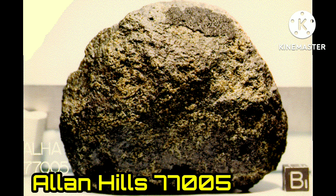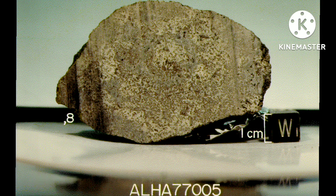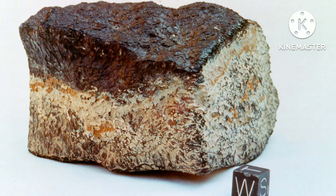Allan Hills 77005 is a Martian meteorite that was found in the Allan Hills of Antarctica in 1977 by a Japanese National Institute of Polar Research Mission Team and ANSMET. Like other members of the SNC group, ALH 77005 is thought to be from Mars.